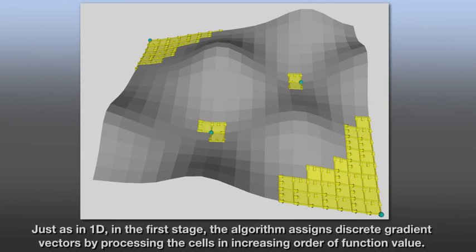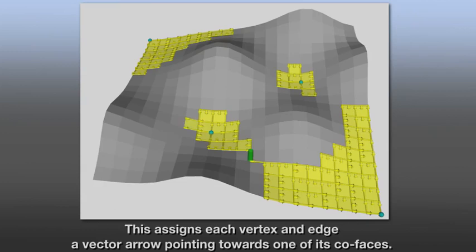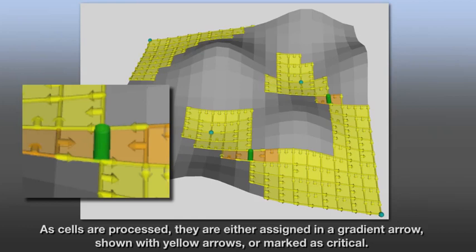Just as in 1D, in the first stage, the algorithm assigns discrete gradient vectors by processing the cells in increasing order of function value. This assigns each vertex and edge a vector arrow pointing towards one of its cofaces. As cells are processed, they are either assigned a gradient arrow, shown with yellow arrows, or marked as critical.